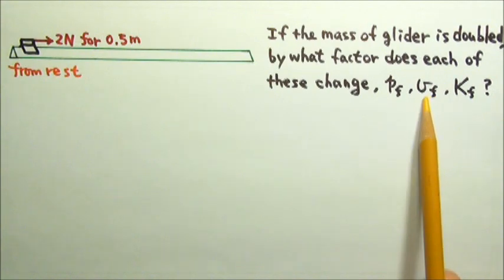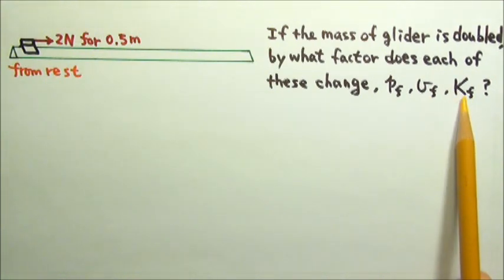The final momentum, the final velocity, and the final kinetic energy of the glider.